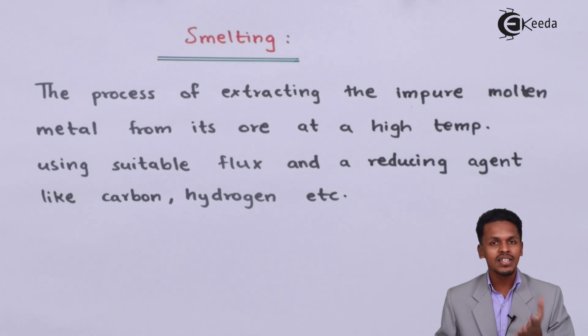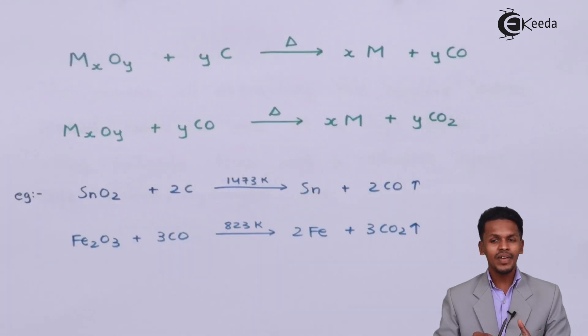Now let us understand a few examples related to it so we can understand this smelting process easily, and what are the impurities and reducing agents we are using in this process.